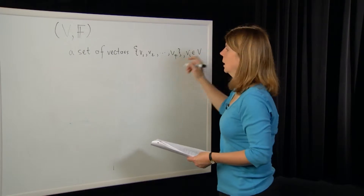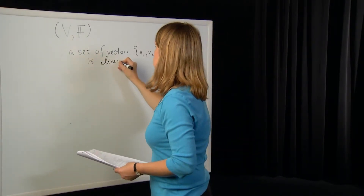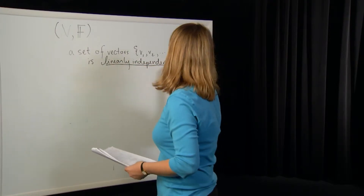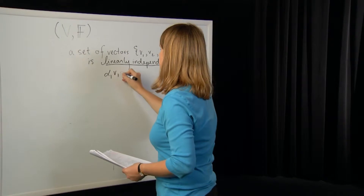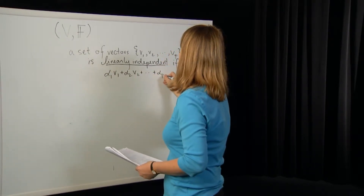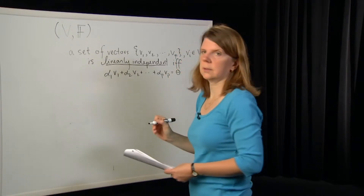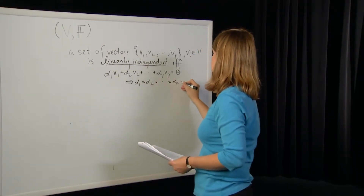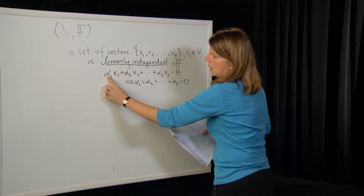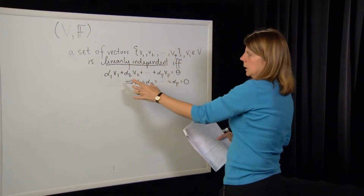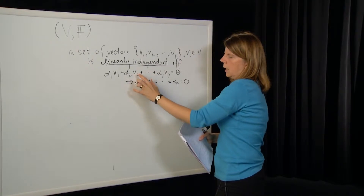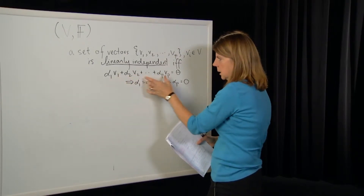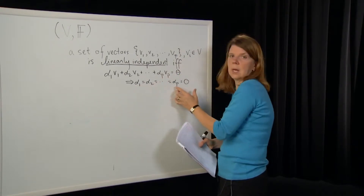Each of the vi's belongs to V. This set of vectors is said to be linearly independent if and only if the following holds: α1·v1 + α2·v2 + … + αp·vp = 0 implies that all of those alphas are equal to zero. Here the alphas come from our field F. What this says is that you can't write any of these vectors as a linear combination of the others — the only way the equation equals zero is if all the alphas are zero.